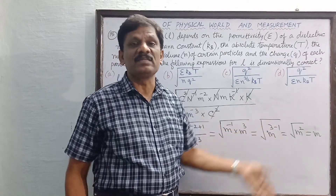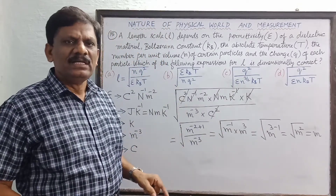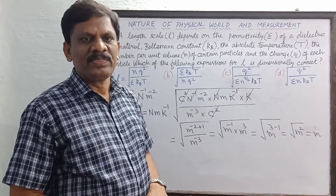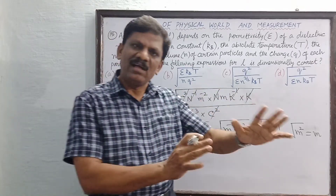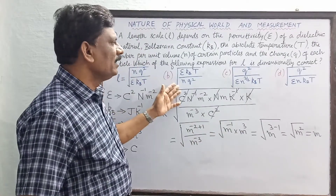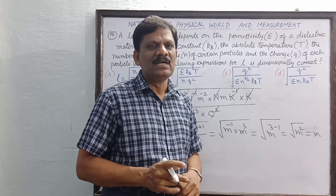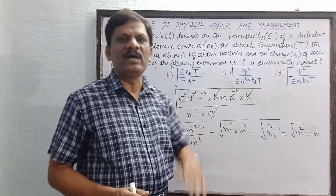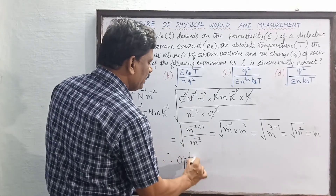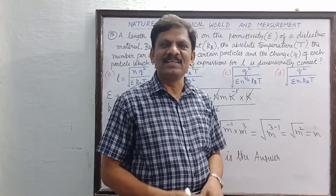Square root of m² equals meter — the unit of length. So Option B has the correct dimensions of length. Note: instead of dimensional formulas, you can substitute units directly to verify. However, for such questions in the exam, keep them for last since it is a random trial-and-error method. Therefore Option B is the correct answer.